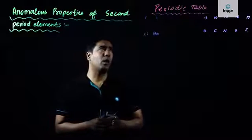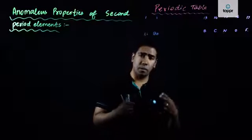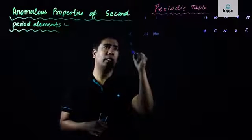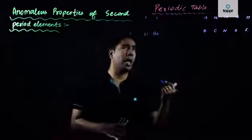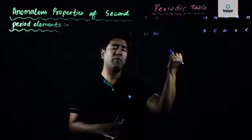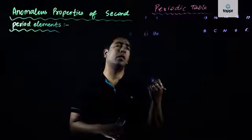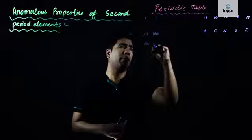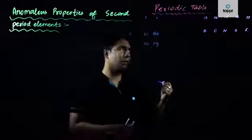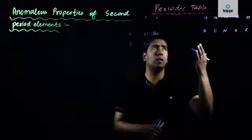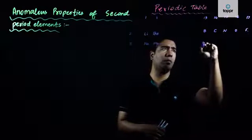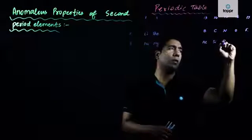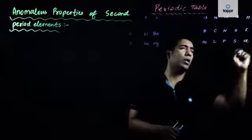Now if we compare their properties with the third period elements, let us see what we get. In the case of the third period elements, we start from sodium, then we have magnesium. Then in group 13 we have aluminium, after which we have silicon, then phosphorus, sulphur, and chlorine in a similar way.